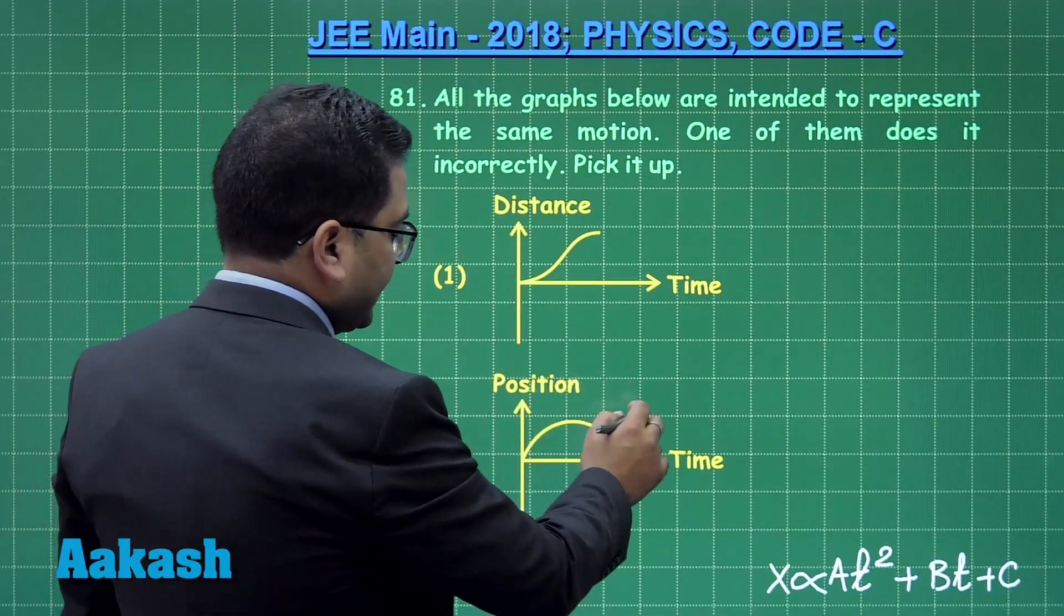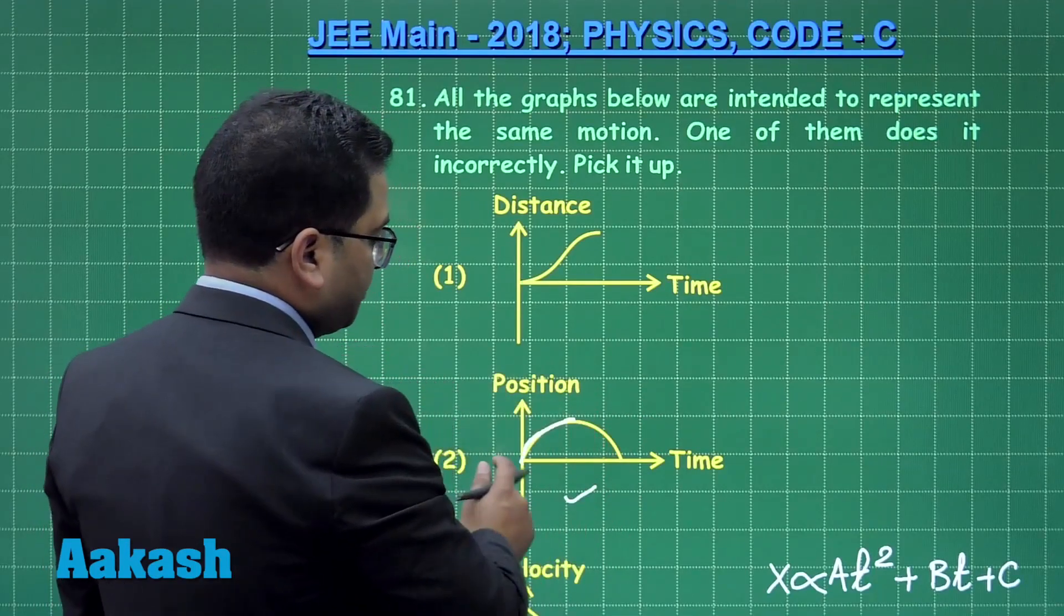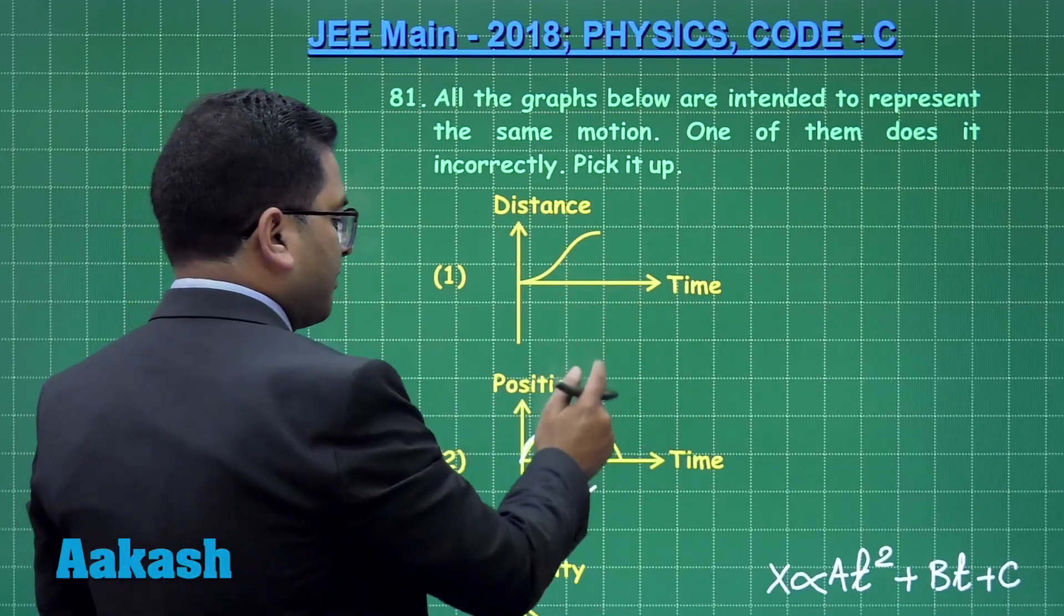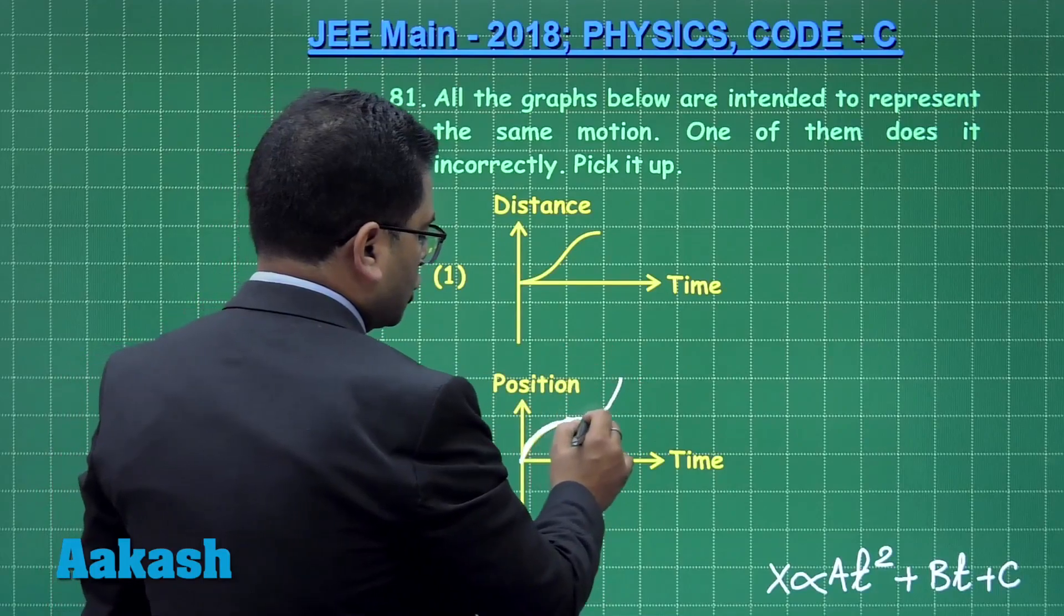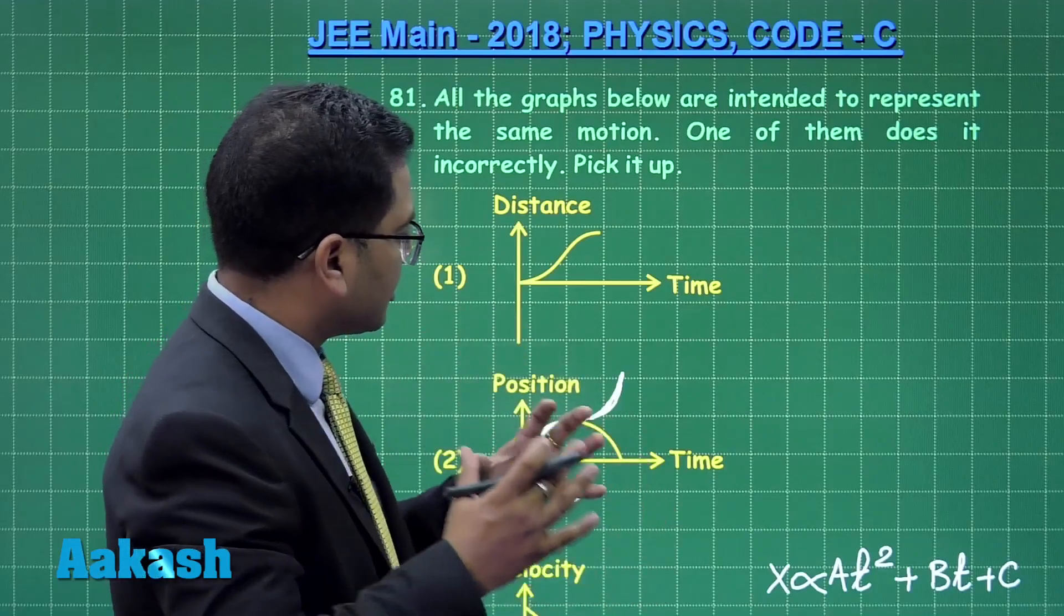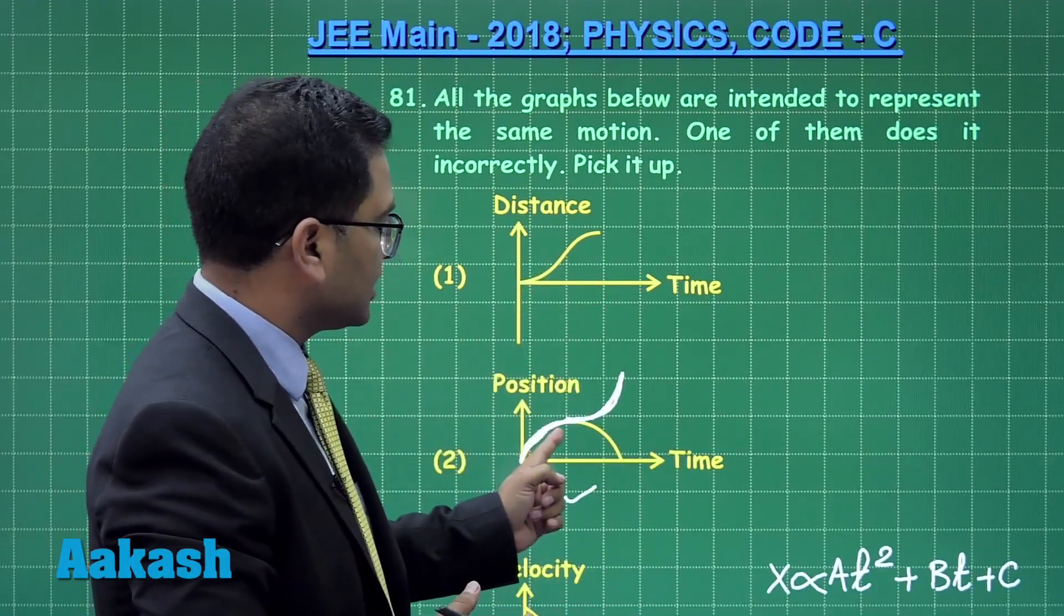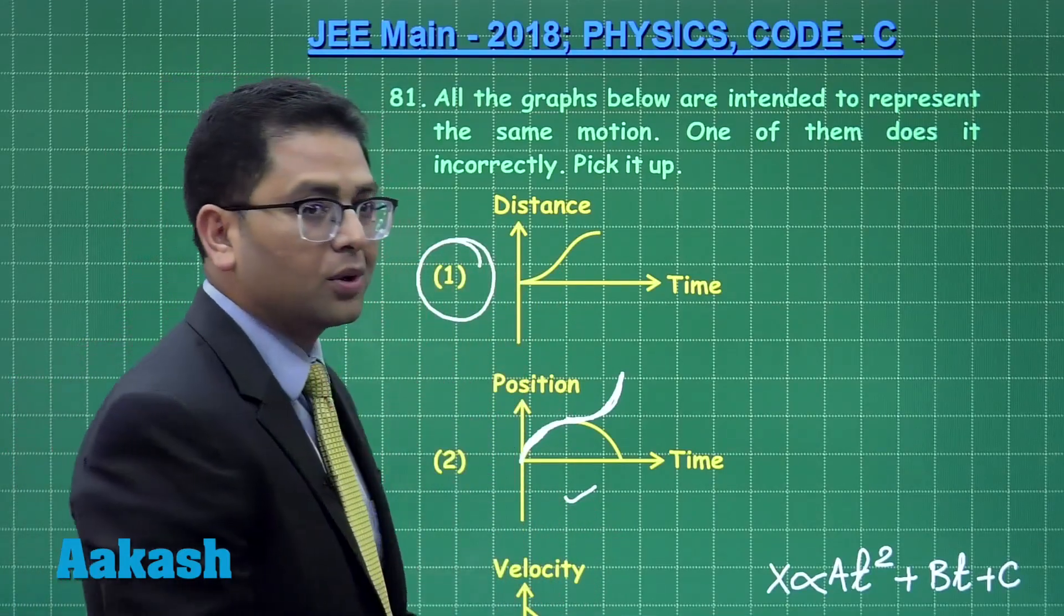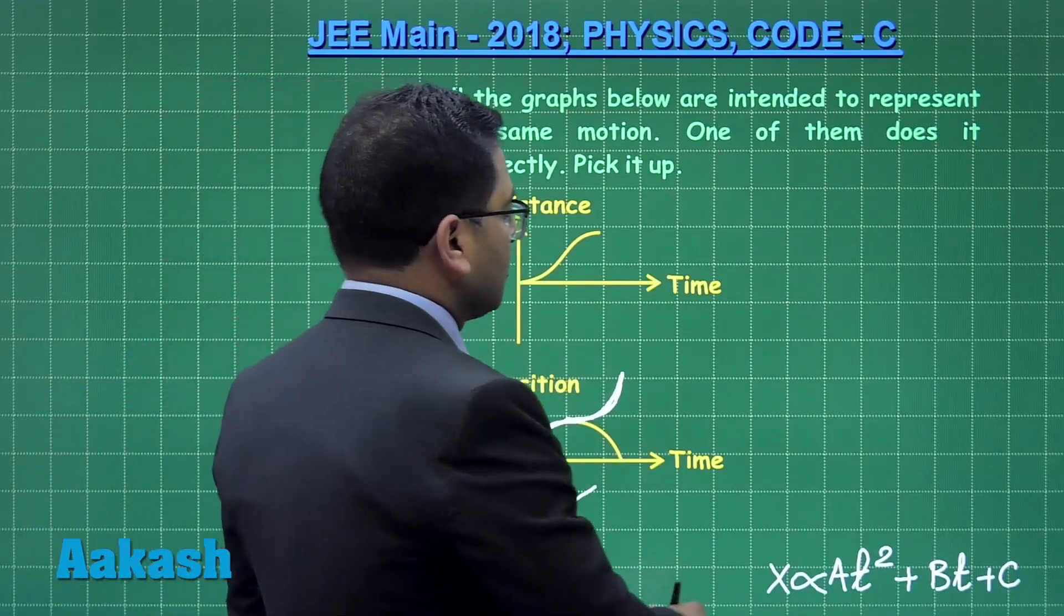This is not valid for a uniform accelerated motion. The odd man out can be picked, or if you go logically, the position part is here so the distance one, this would be identical to the position part and the next just the mirror image of this. If you see, this would be the distance, the one shown by the white ink would be the distance-time graph for this position-time graph. This one is not matching, so clearly option number one is the odd man out and the correct solution.